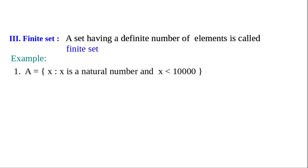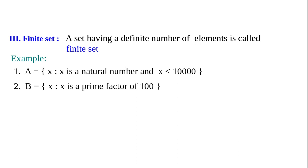Example: B equals the set of all x such that x is a prime factor of 100. Now 100 = 2 × 2 × 5 × 5, so the only two prime factors of 100 are 2 and 5. We can count the number of elements in B, therefore B is a finite set.